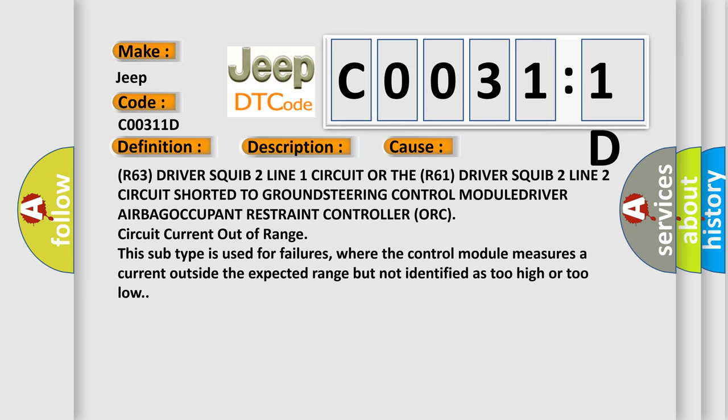Circuit current out of range. This subtype is used for failures where the control module measures a current outside the expected range but not identified as too high or too low.